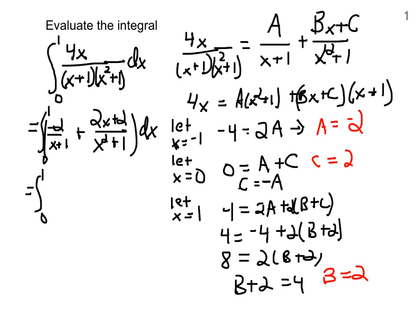Because we're not immediately able to find the antiderivative of 2x plus 2 over x squared plus 1. And so, we have a negative 2 over x plus 1, a 2x over x squared plus 1, and a 2 over x squared plus 1. And then we need to find the antiderivative of each one of these separately.